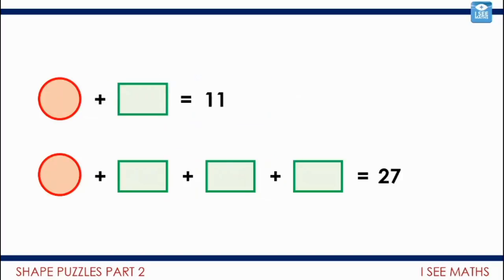Let's have a look at this example here. So the top line equals 11. The bottom line equals 27. Pause the video. This time, what's the same and what's different between those pictures? Can you work out the value of that rectangle?